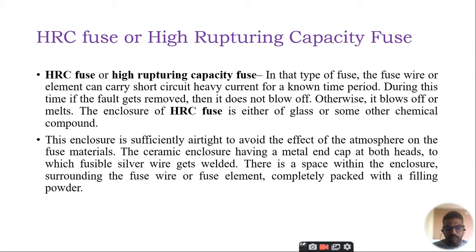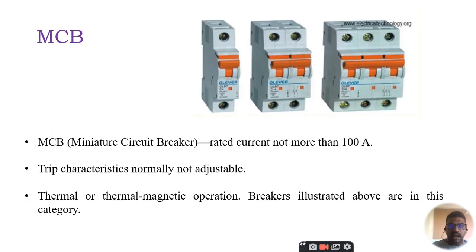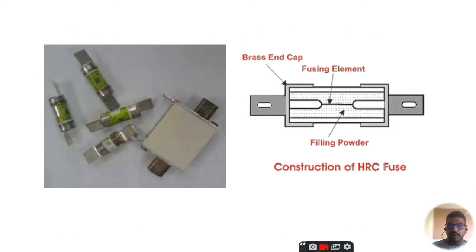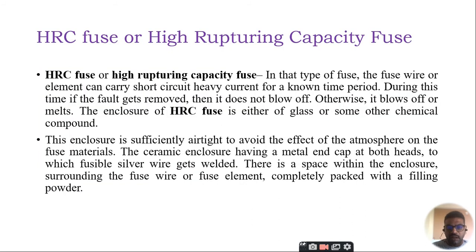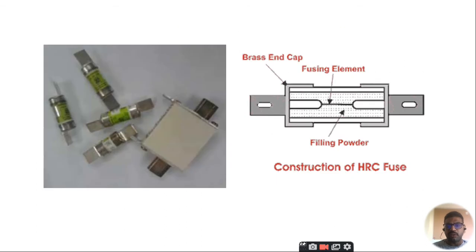The enclosure of HRC fuse is made up of glass or chemical compound. The ceramic enclosure has metal caps on both ends where fusible silver wire gets welded. Filling powder is packed in the space between enclosure and the brass end cap. This is the diagram of high rupturing capacity fuse.